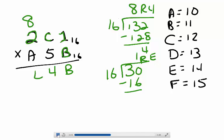So I write E here, and then I have one group of 16 which I carry over.